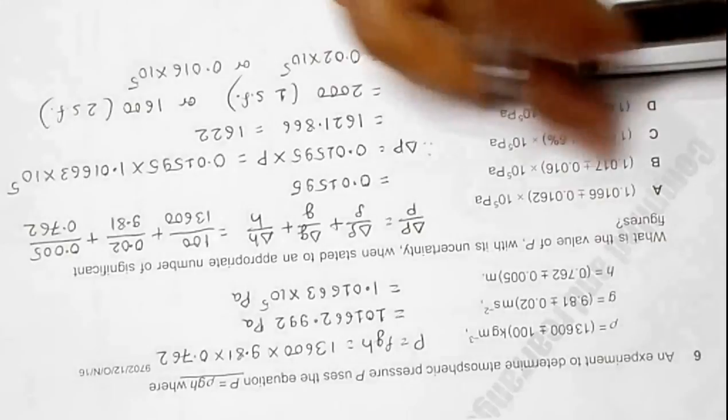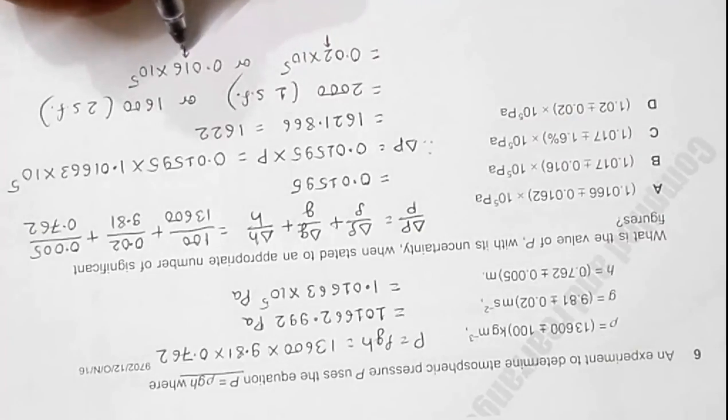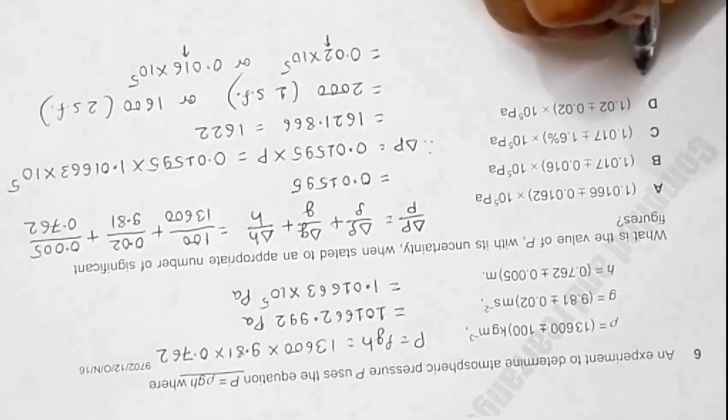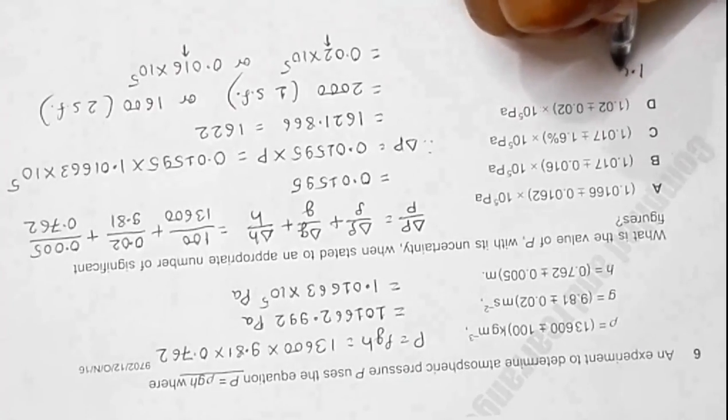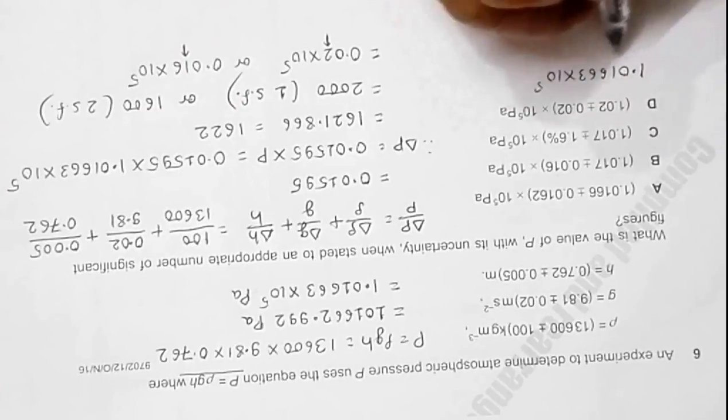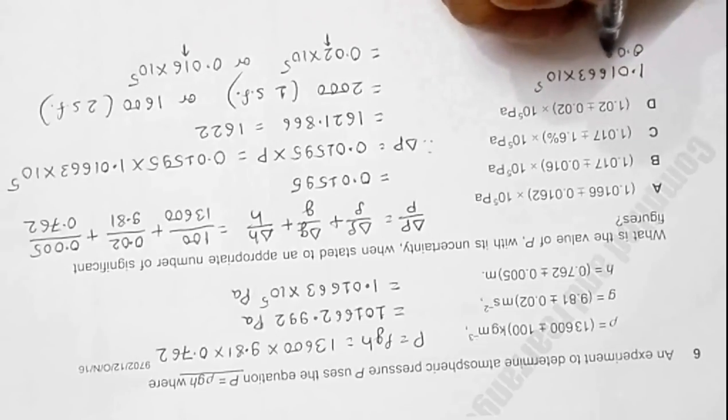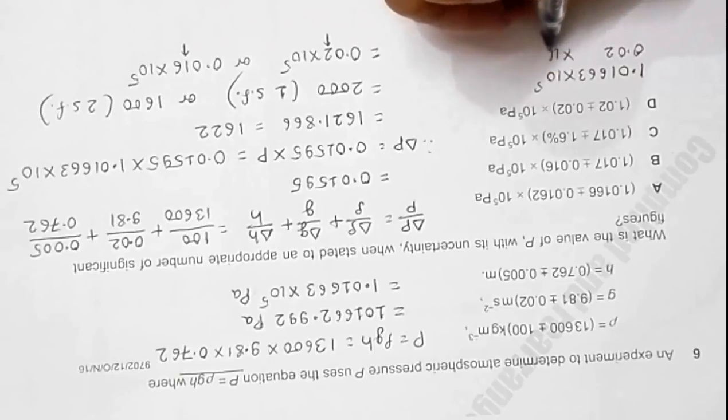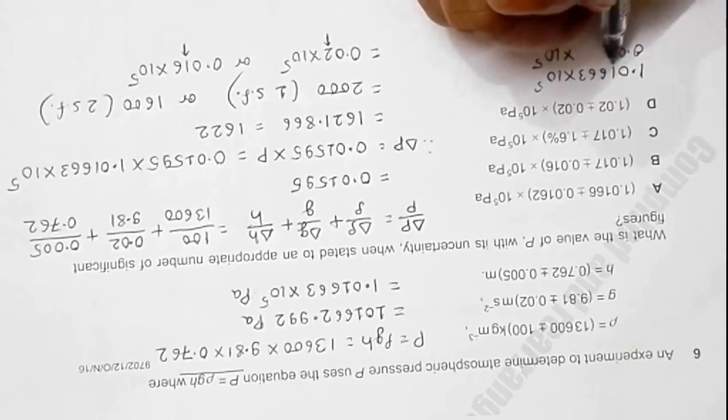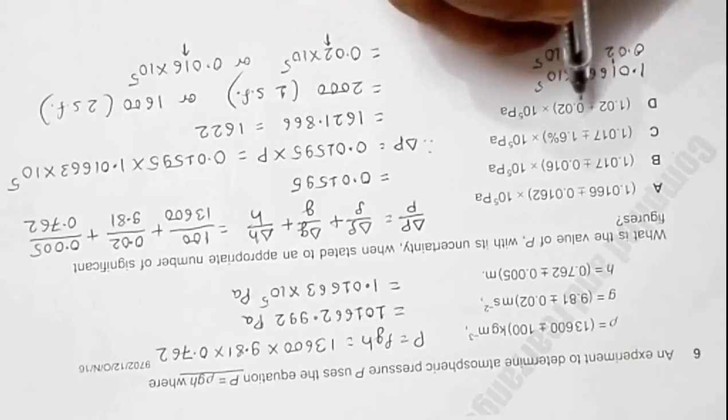Now with the errors, whatever happens here, the error starts from the second digit after decimal. Let me write it here: it is 1.01663 times 10 to the power 5, and the error is starting from the second digit, so it is 0.02 times 10 to the power 5. I must round it off at the second digit after decimal.